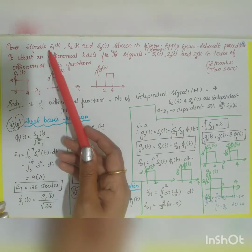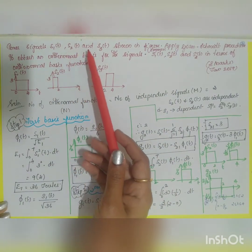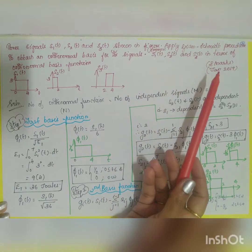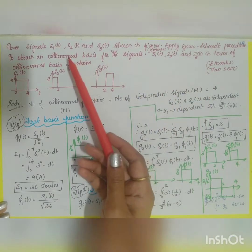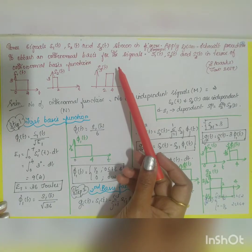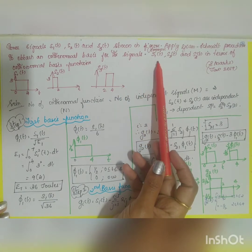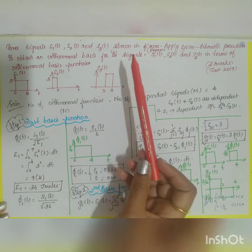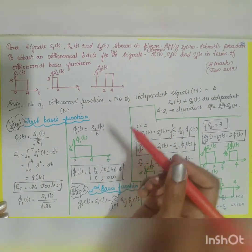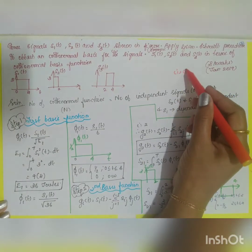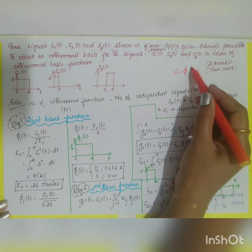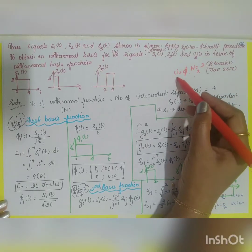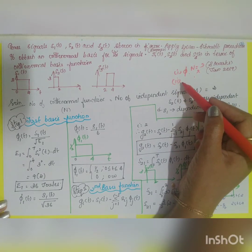The next question: three signals s1(t), s2(t), and s3(t) are shown in the figure. Apply Gram-Schmidt's orthogonalization procedure to obtain an orthonormal basis function for the signals, and express s1(t), s2(t), and s3(t) in terms of the orthonormal basis functions. So there are two tasks to be performed: one is to find the number of orthonormal basis functions, i.e., what n equals, and second, to express all signals in terms of orthonormal basis functions.